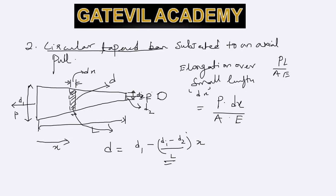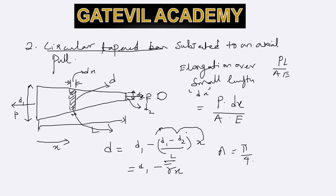This total term is the change in diameter over length x, which is subtracted from D1 to get diameter d. Since the term (D1 - D2)/L is constant, let's call it gamma (γ). So the diameter at distance x is d = D1 - γx, and the area of this small bar is A = π/4 times (D1 - γx) squared.